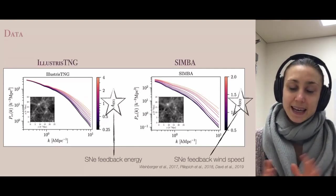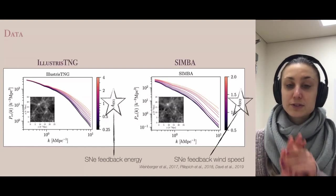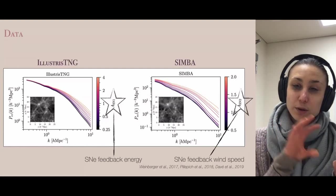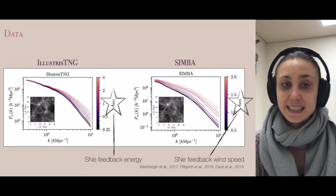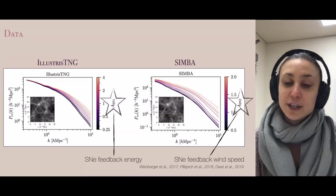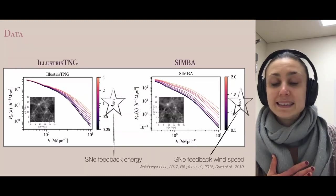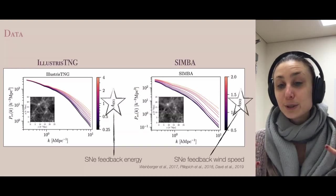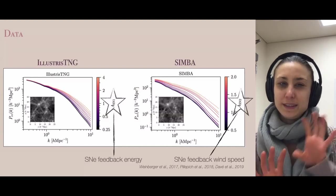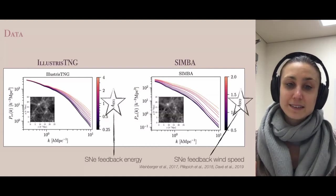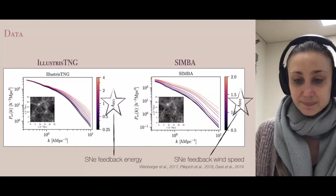For both simulations, the power spectra are shown as a function of the astrophysical parameter they're most sensitive to. In CAMELS, baryonic effects such as supernova and AGN feedback are parameterized using four parameters. IllustrisTNG is most sensitive to the amount of energy in supernova feedback, whereas for SIMBA the electron density power spectrum is most sensitive to the wind speed in supernova feedback. This is really surprising — it means that changes in the power spectrum are driven by distinct physical effects in each simulation.